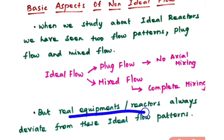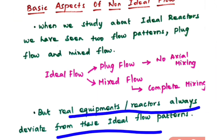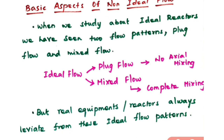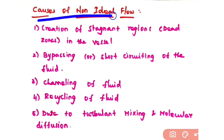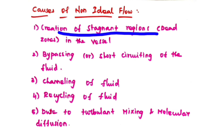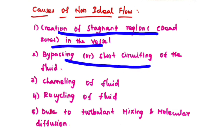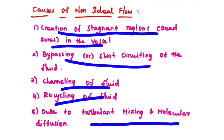But real equipment or reactors always deviate from these ideal flow patterns. One or many factors may cause non-ideal flow patterns. The causes of non-ideal flow patterns are: creation of stagnant regions or dead zones in the vessel, bypassing or short-circuiting of the fluid, channeling of fluid, recycling of fluid, or it may be due to turbulent mixing and molecular diffusion inside the reactor.